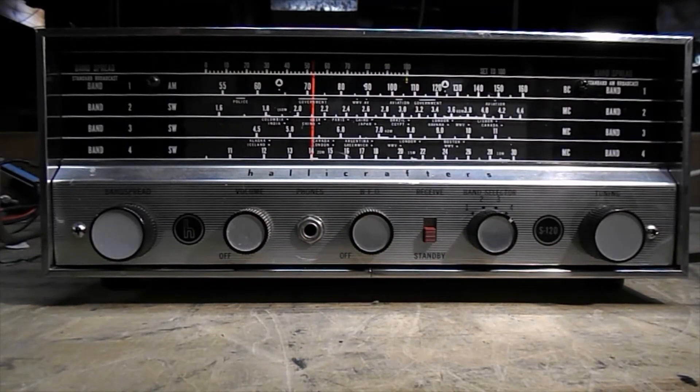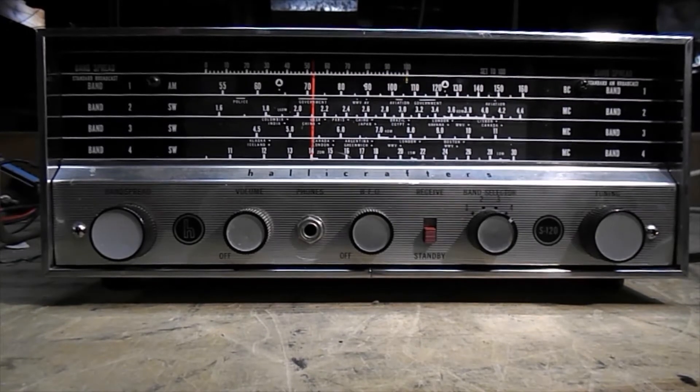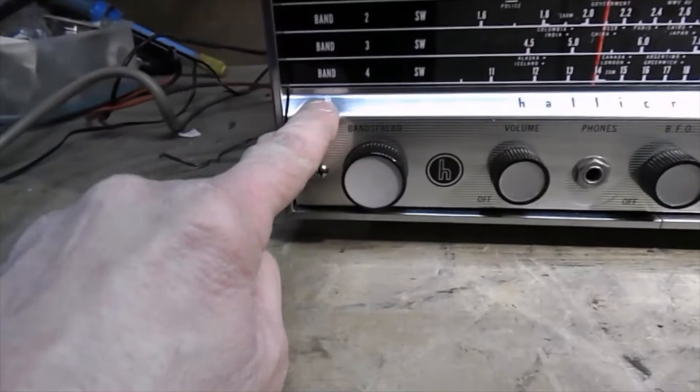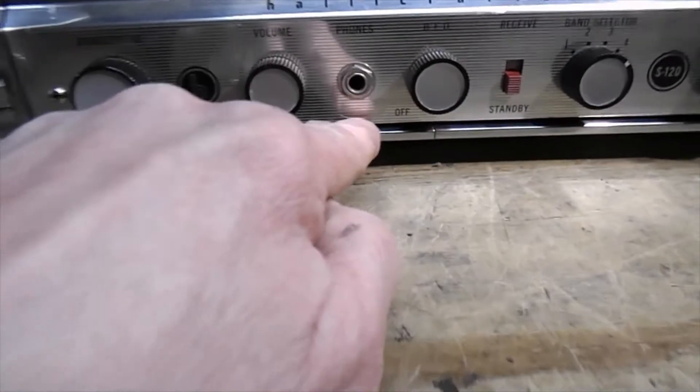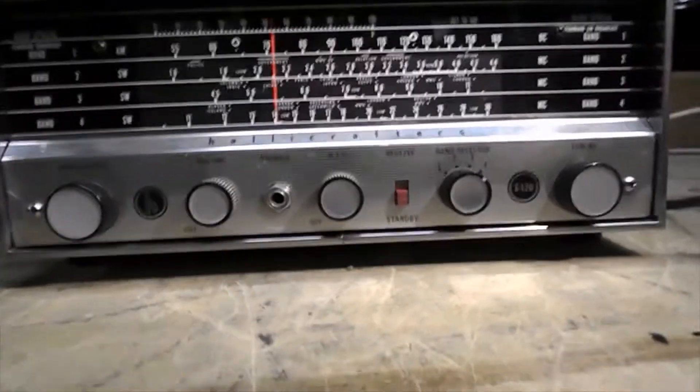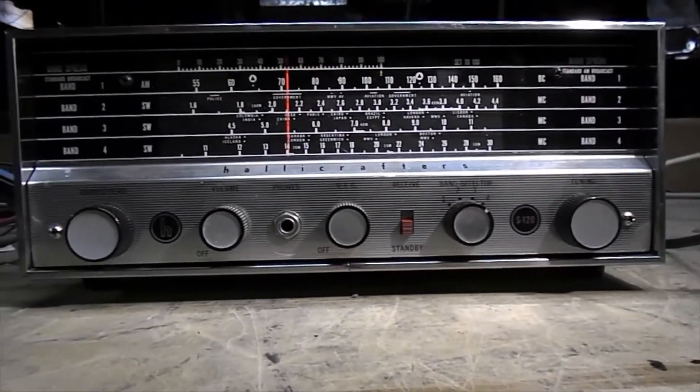Alright, this is the finished project. I've replaced all the capacitors. I've done the alignment twice. I wasn't happy with the alignment the first time, so I redid it and it's still not dead on accurate. But for a radio this age, it's very close. I put the cabinet back on it. I put the feet back on it. The cabinet is in really good shape as you can see. There's a little tiny scratch on the top. And a little tiny scratch right there. A little tiny scratch right there. It's hard to see. But it came out good.